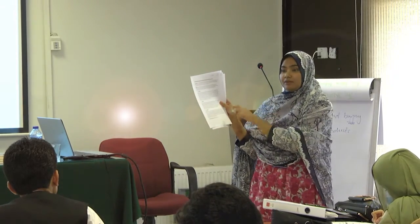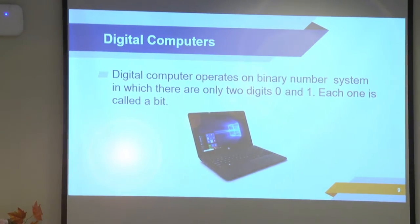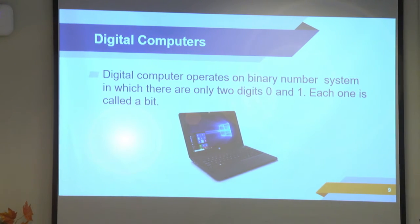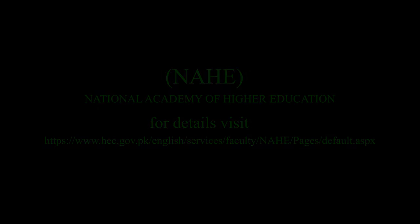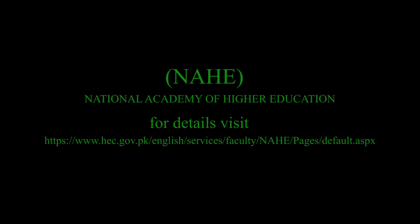Brief introduction: you just have to write the most important motive for that sector. There are three sectors — the first one is banking, the second is text, and the third is education. Just read the sector's information and then answer which motive is the most important for that sector. Digital computers are those that work on figures or digits.